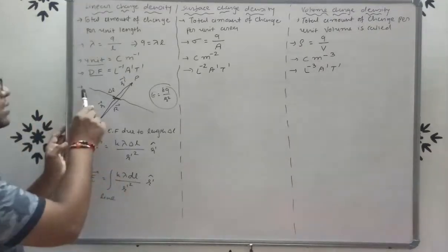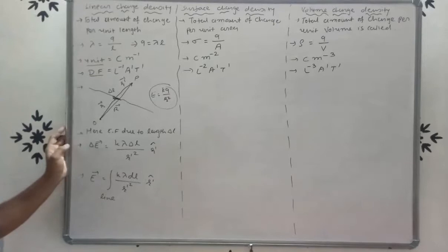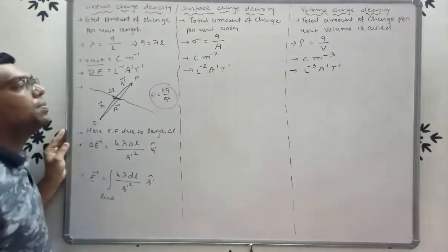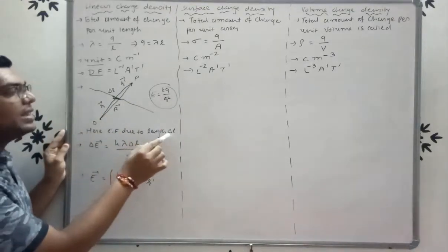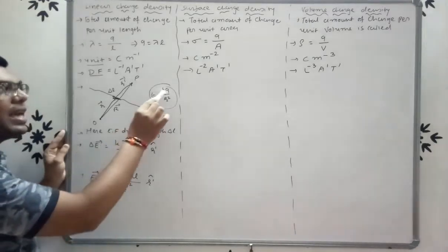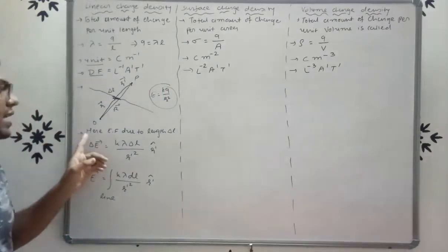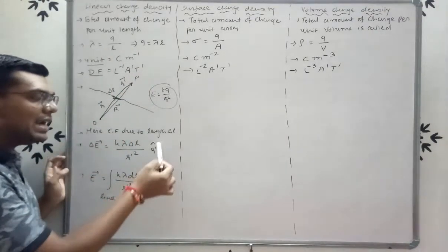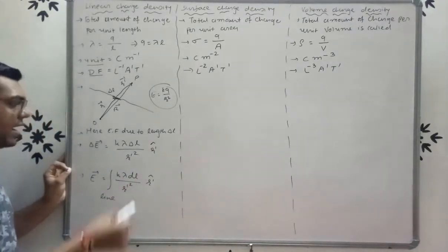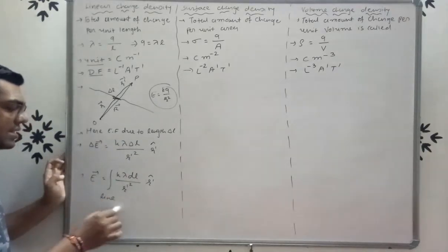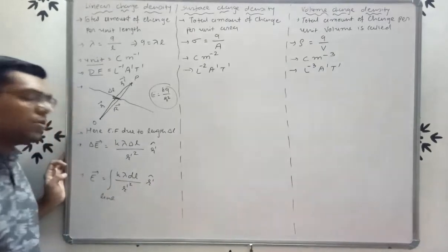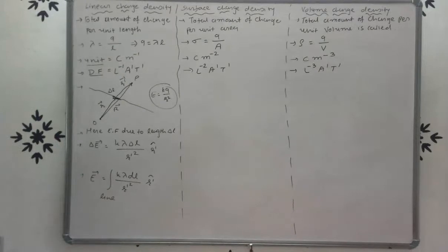Again, for a line of length L, the electric field at point P due to small element δL is δE = K·λ·δL / R'² · R̂'. To find the total electric field we take the line integral: E = ∫ K·λ·dL / R'² · R̂'. Now for surface charge density, consider a surface with a small area element δA.